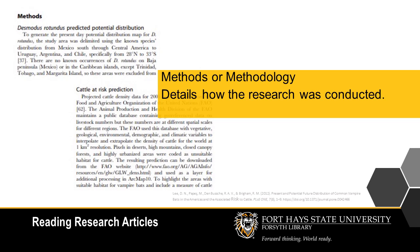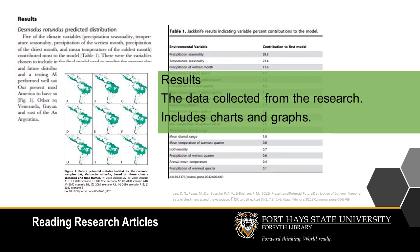The Methods, or methodology of the research. This is exactly how the research is set up to test their hypothesis — whether that is a case study, experiment, or trials. The Results section is the data and information collected and analyzed during the research. This is often illustrated with charts and graphs.